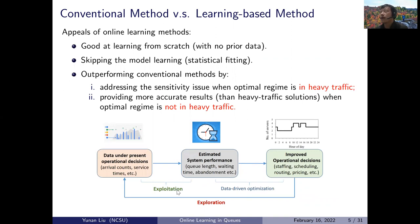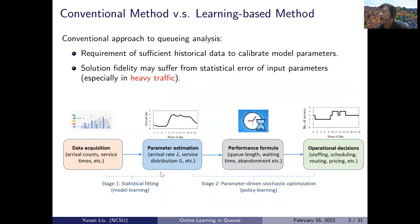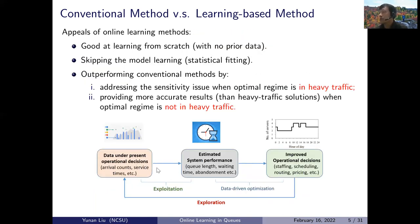With online learning, we use data to estimate performance metrics such as queue length, waiting time, and abandonment. We use these estimated metrics to make decisions such as staffing, scheduling, and routing, and put them into use to generate data through exploration. These decisions generate data — arrival counts, service times — which are then used to improve decisions again. This is a self-evolving loop, the essential idea of online learning or reinforcement learning. The key benefit is that the parameter calibration step is omitted, removing the layer that could generate propagated error.